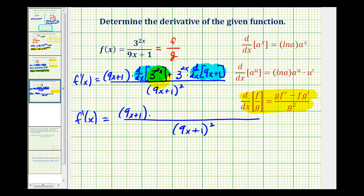This is a composite function, so we'll have to apply the chain rule. Our derivative formula is here, so notice that a is equal to 3, u is equal to 2x, therefore u prime is equal to 2.